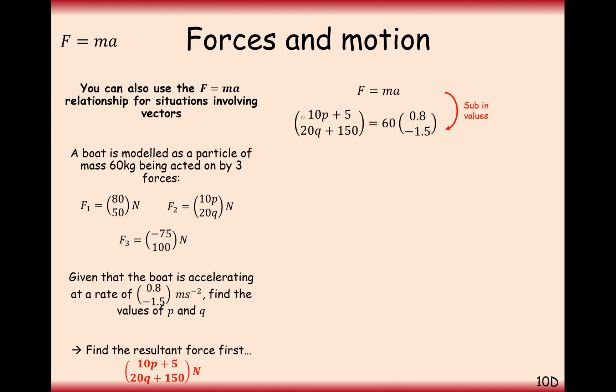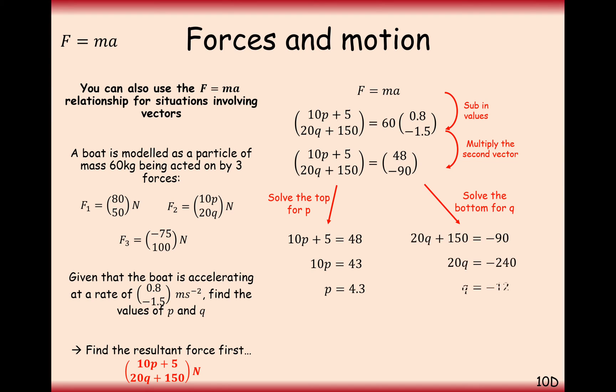So we've got force, the resultant force that we found from all three of those forces added up together, equals mass 60 times acceleration, 0.8 over minus 1.5. So expand out your right-hand side, and then solve for p by using the top row, and solve for q by using the bottom row. Looking at the top row on both of the vectors here, 10p plus 5 equals 48. So p is therefore 4.3. And solving for q on the bottom row, we get q is equal to minus 12. So there we are. Those are the values of p and q. Final answer, 4.3, and q is minus 12.